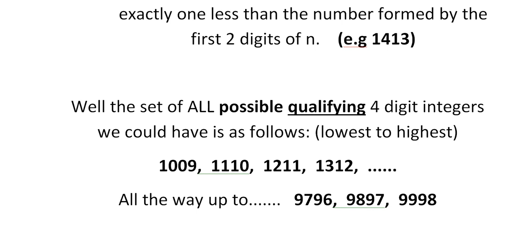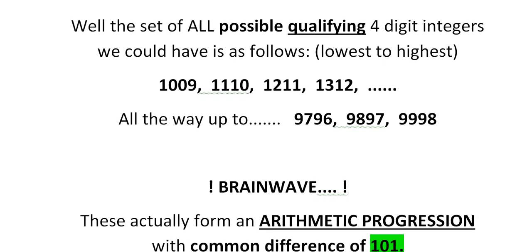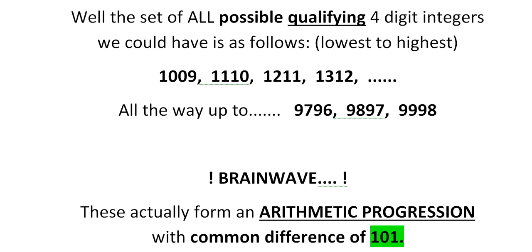Sadly, none of the numbers listed are actually perfect squares, so we need to do more digging. But notice something very special about these numbers — they actually form an arithmetic progression with a common difference of 101. An arithmetic progression is a series of numbers with a common difference, like counting from one to ten. These numbers, starting from 1009 all the way up to 9998, all have a common difference of 101, and that is very important for solving this problem.